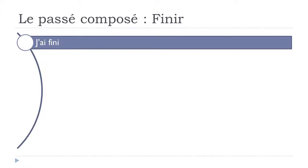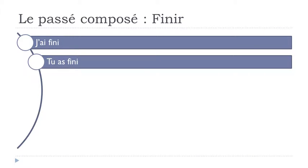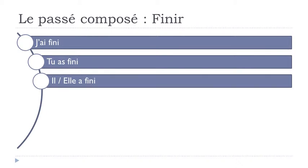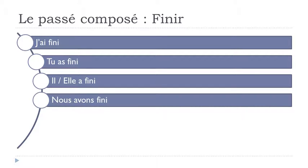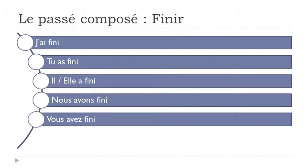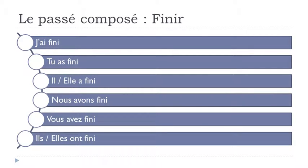J'ai fini. Tu as fini. Il a fini. Feminine form: Elle a fini. Nous avons fini. Vous avez fini. Ils ont fini. Elles ont fini.